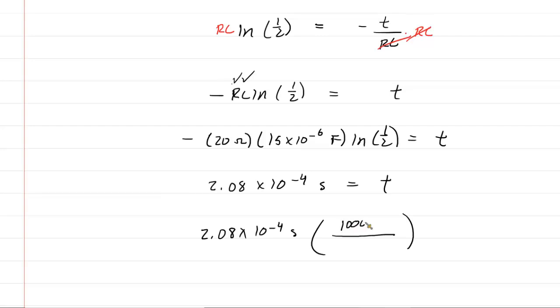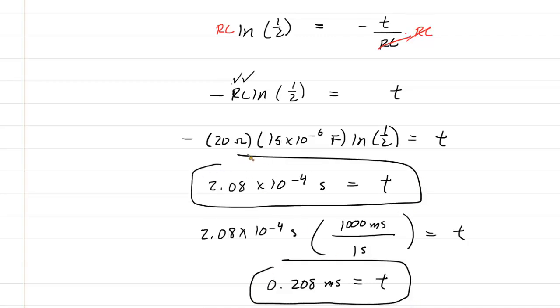So basically, you're multiplying by 1,000. And when you do that, you get about 0.208 milliseconds. So if you need your answer expressed in milliseconds, it would be that. If just in seconds, it would be that.